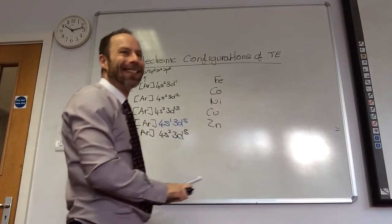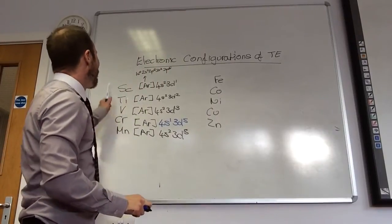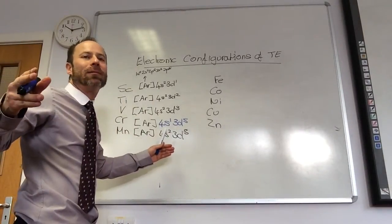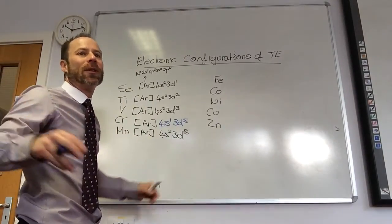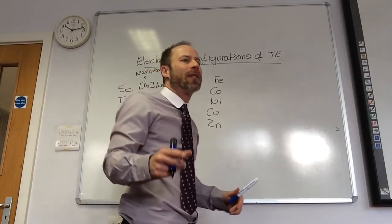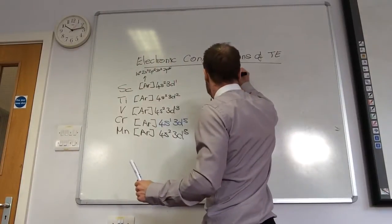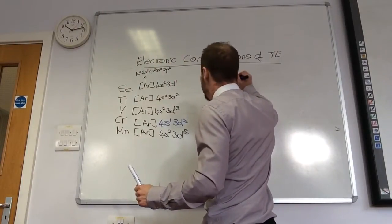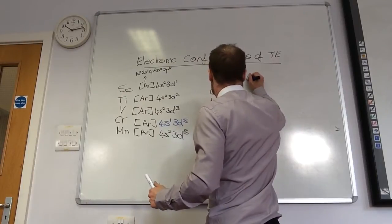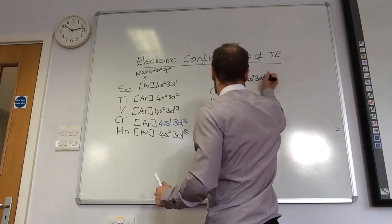Scandium is not technically a transition element, but it's in the D block so we do it anyway — you still need to be able to write its electronic configuration. Iron is going to be argon, 4S2, 3D6, using the same pattern.